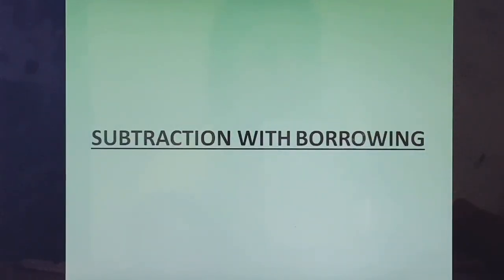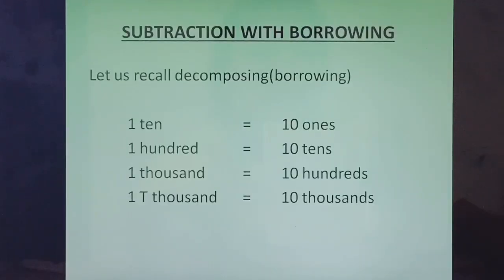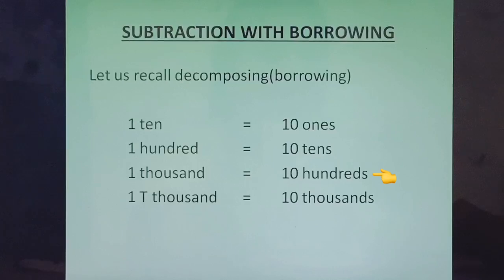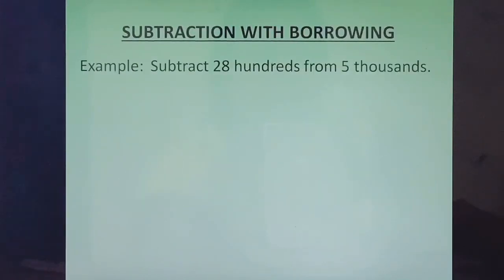Subtraction with Borrowing. First, let us recall decomposing or borrowing. 1 ten is equal to 10 ones. 100 is equal to 10 tens. 1000 is equal to 10 hundreds. And 1 ten thousand is equal to 10 thousands.